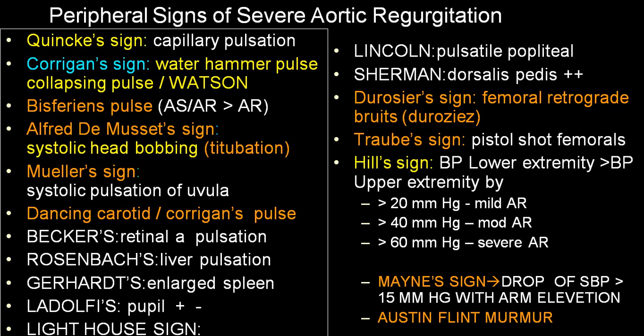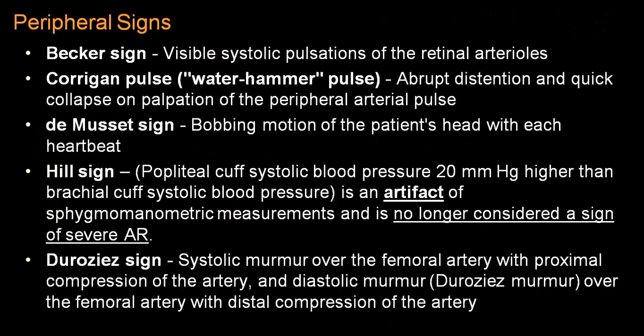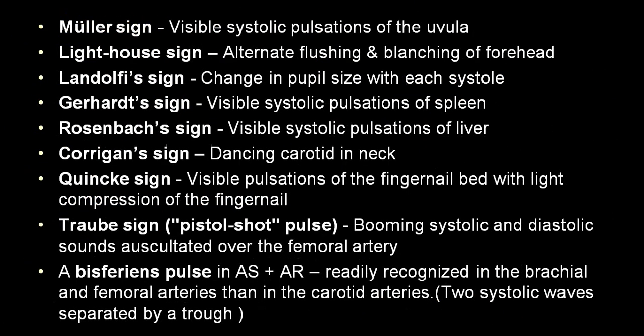These are some of the signs. I will be putting slides where there are many other signs you can go through. We already mentioned Baker's, Corrigan's sign, Alfred De Musset, Hill's sign, Duroziez's sign, etc. At your leisure time, you can go through. These include: Muller's sign, Lighthouse sign, Ladolf sign, Gerald's sign, Rosenbach's sign, Corrigan's sign, Quincke's sign, Traube's sign or pistol shot femoral, and bisferious pulse. These are all signs we already discussed — they can be asked in your oral exams.